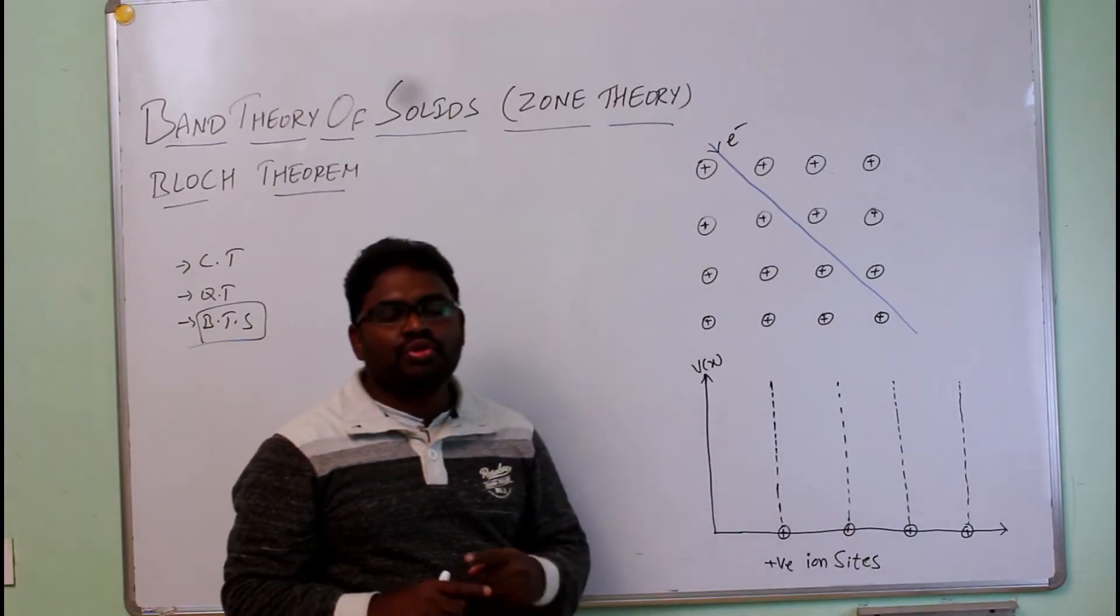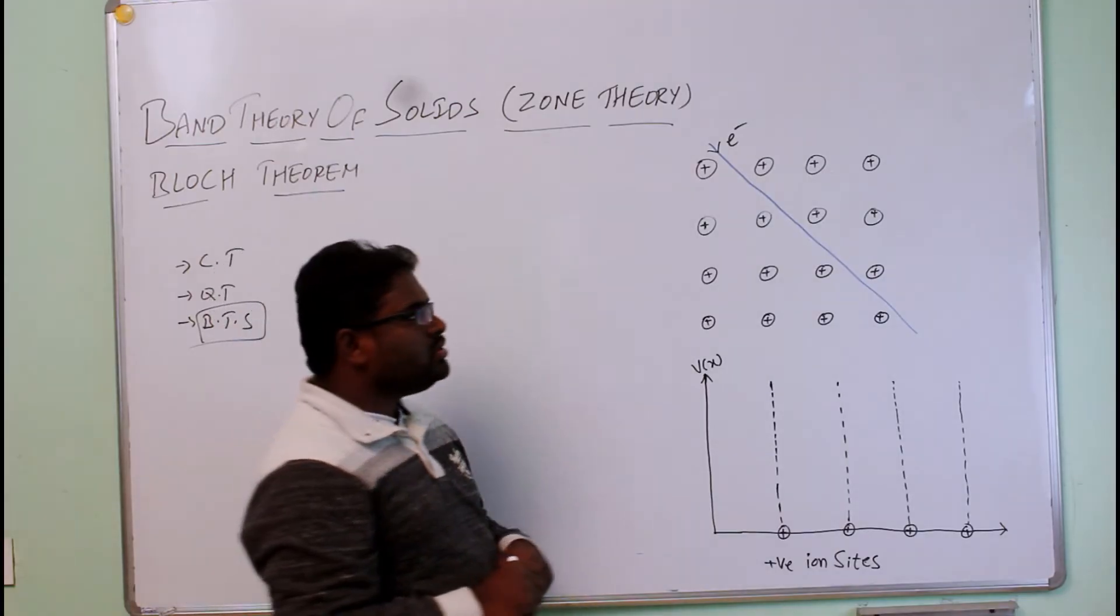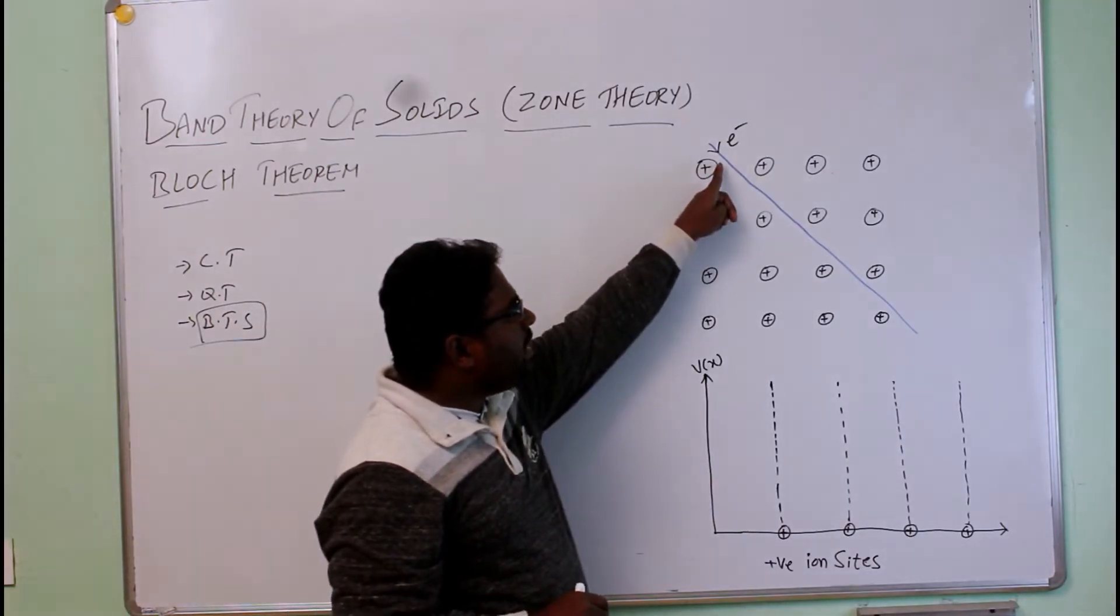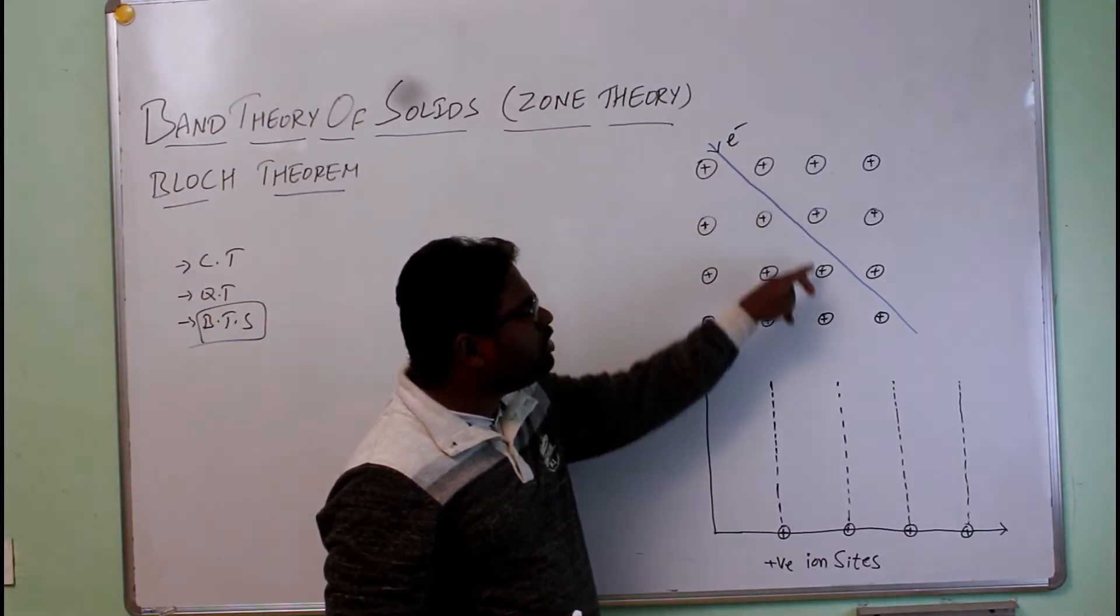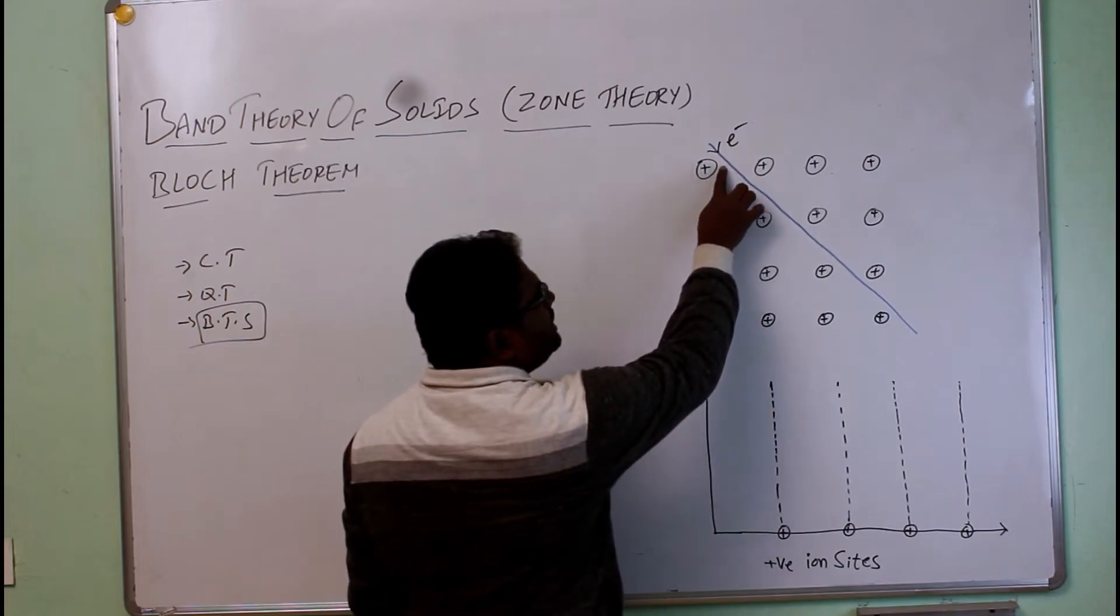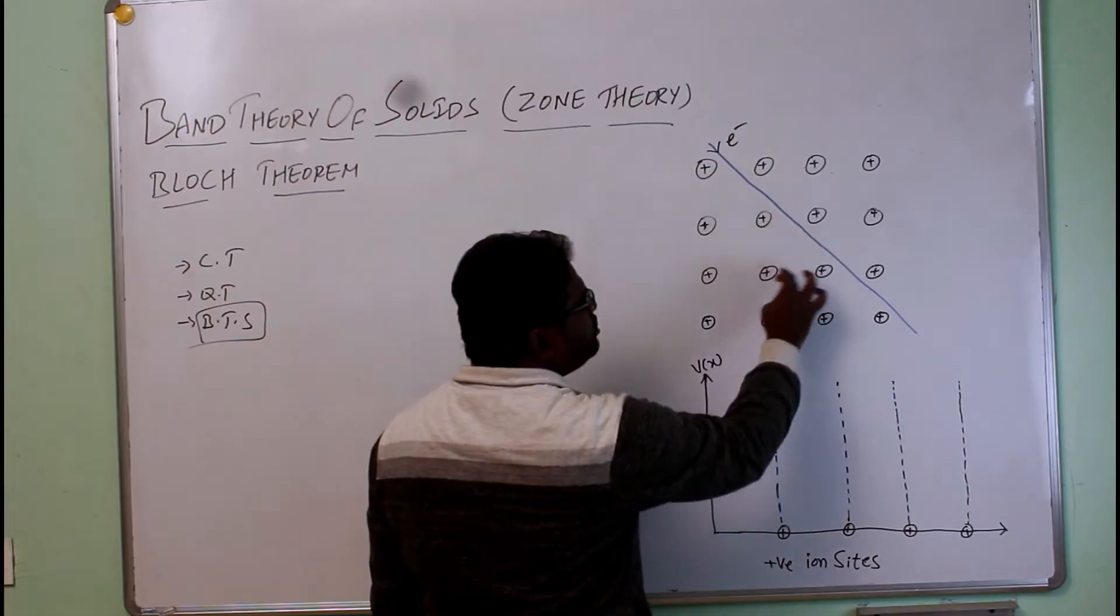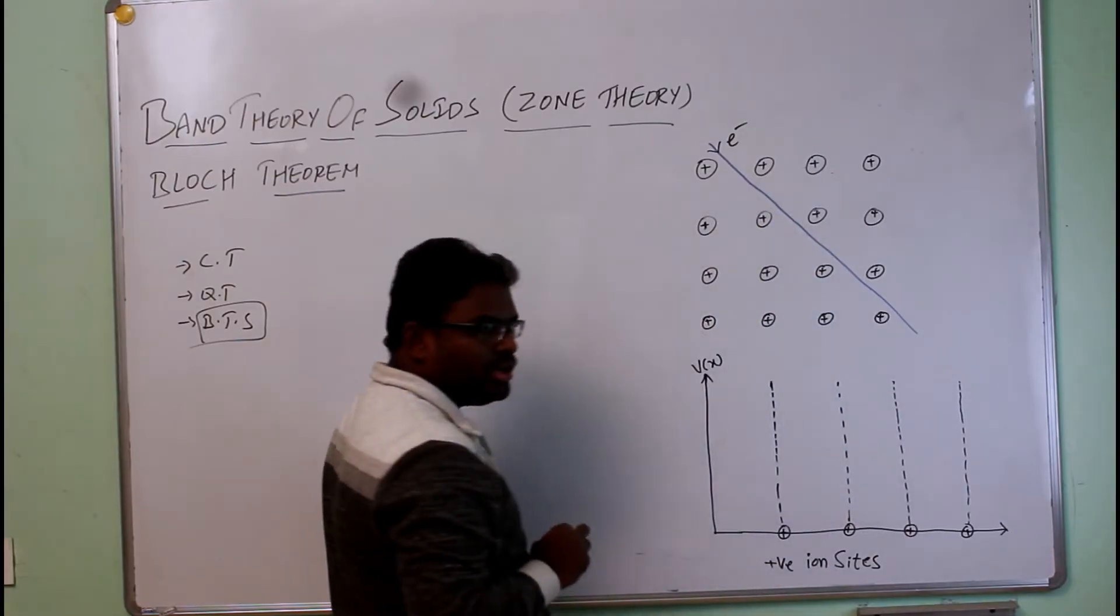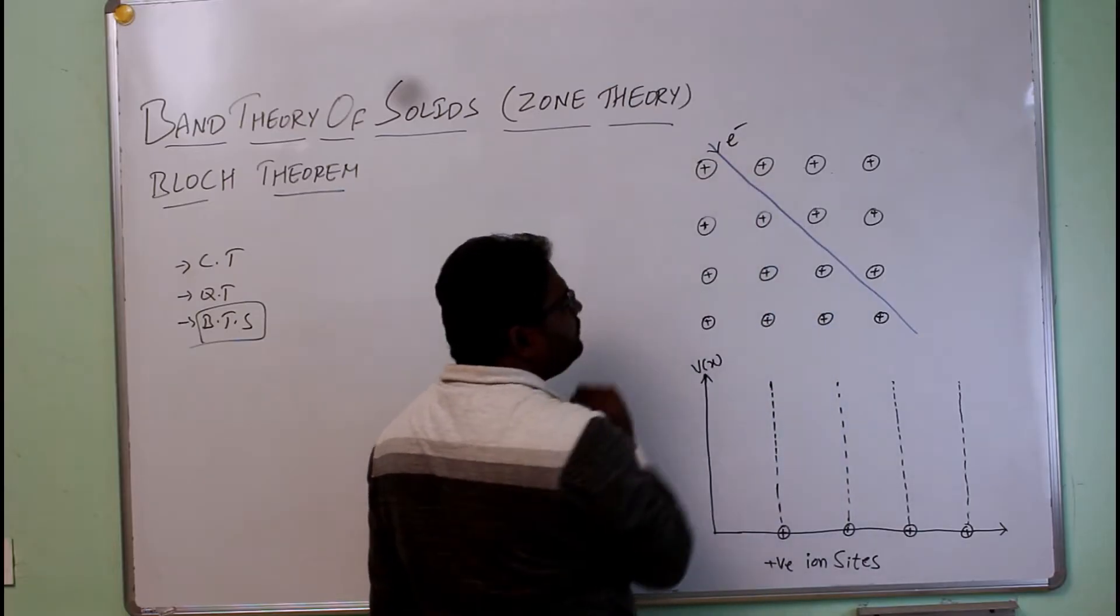According to Bloch, since the electrons are not passing at a uniform potential, they are passing through a periodic potential. At the lattice point the electron can move freely, in between the lattice points the electron cannot move freely. At the lattice point it is interacting with only one nucleus, in between it is interacting with the neighboring nucleus points. So here it can travel slowly, here it can travel freely.